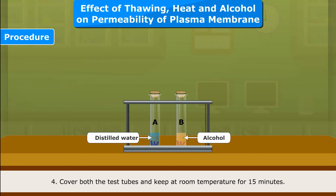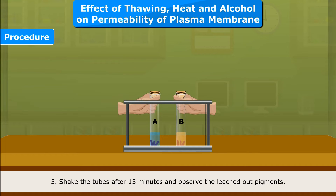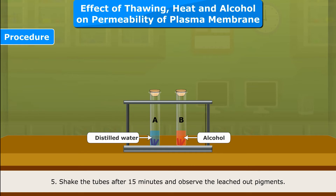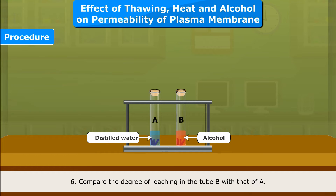Cover both the test tubes and keep at room temperature for 15 minutes. Shake the tubes after 15 minutes and observe the leached-out pigments. Compare the degree of leaching in tube B with that of tube A.